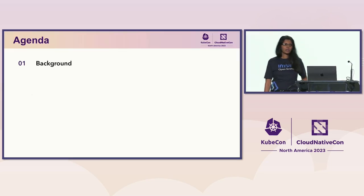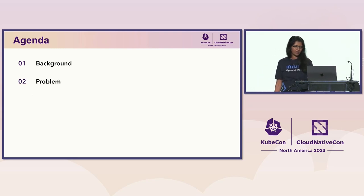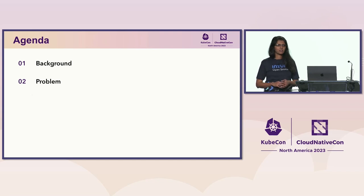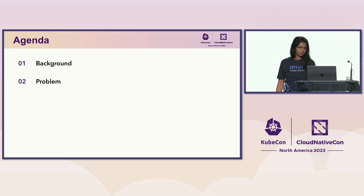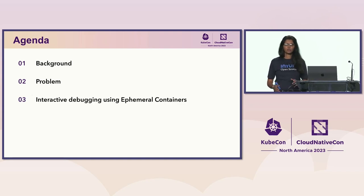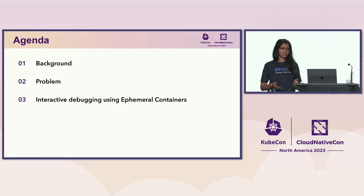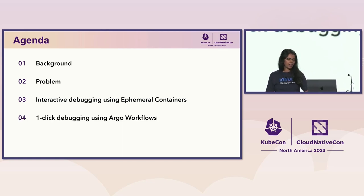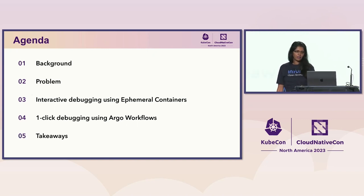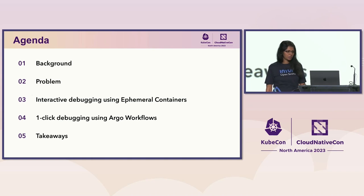Today, we'll start off with giving a little bit of background of Intuit and our infrastructure at a glance, and get into the problem statement — why are we even giving this talk, what are we solving, why did we build a debuggability paved road? Then we'll jump into how we built the paved road using two technical solutions: interactive debugging using ephemeral containers, and one-click debugging that we built with Argo workflows. And we'll finish with some takeaways for you.